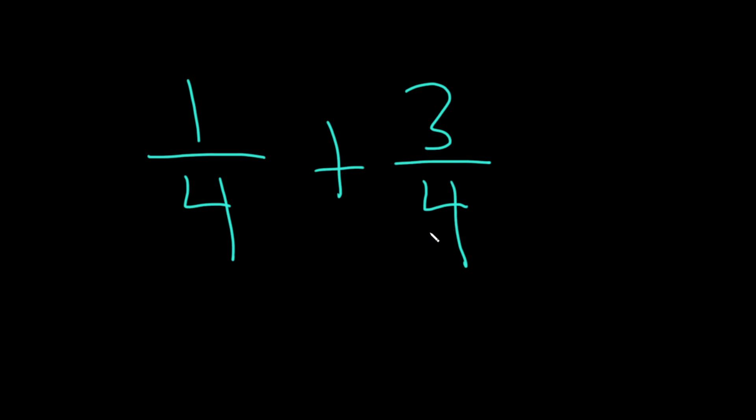The denominator is the number on the bottom, and the numerator is the number up top.